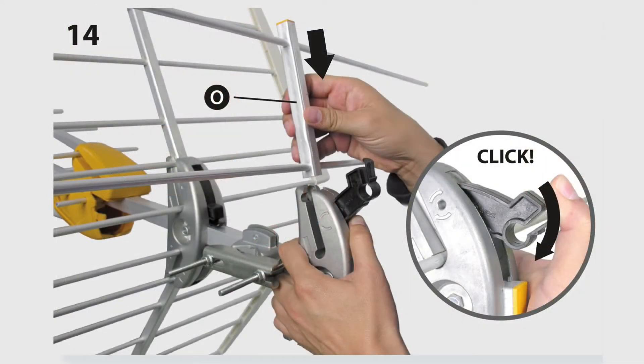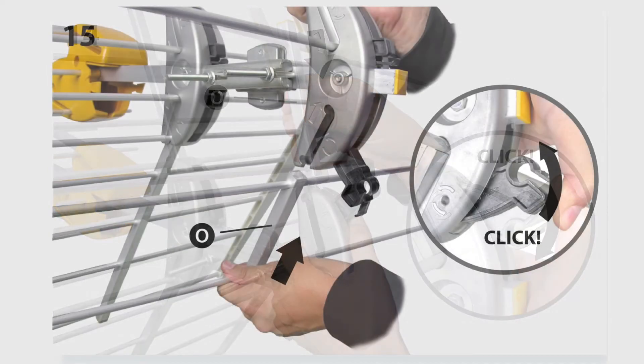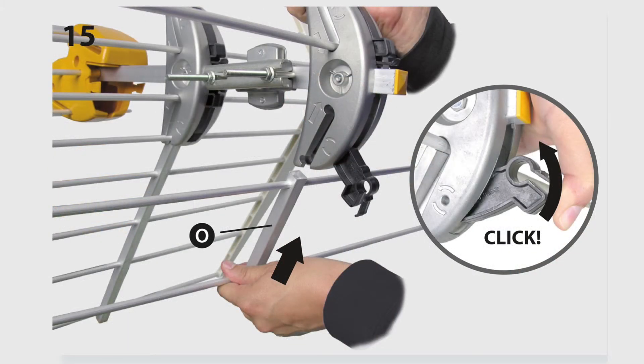The back reflector is going exactly the same way. The only thing you really need to know about this is that there's a plastic cap on one end, and that plastic cap should be furthest away from the center of the antenna.